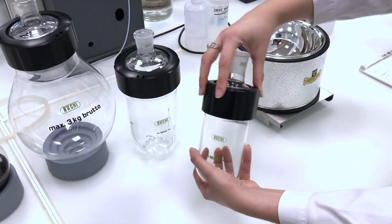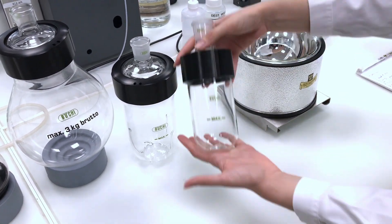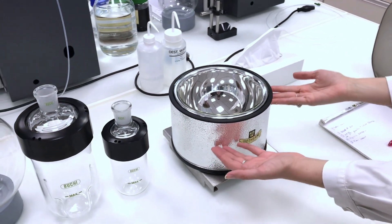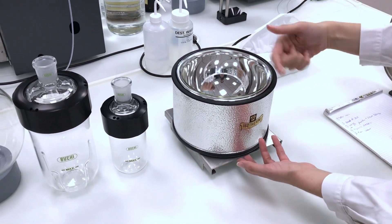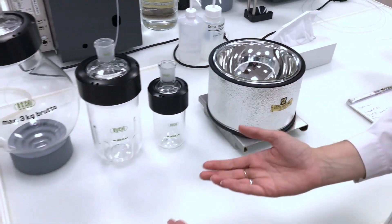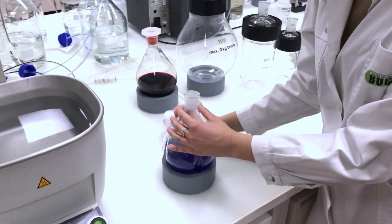And next here we have what we call the Dewar accessory. If you want to do some freeze drying sample preparation, you put this instead of the bath, put your flask, and then it just prepares your sample for freeze drying with dry ice inside.